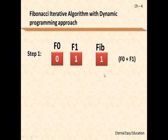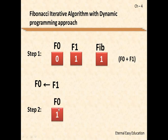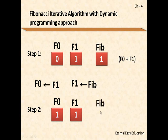Step 2: the value in f(1), which is 1, is given to f(0), so f(0) is now 1. Next, the fib value, which is 1, is given to f(1), so f(1) is now 1. Then fib = f(0) + f(1) = 1 + 1 = 2. The same process is repeated, so we now have two Fibonacci numbers: 1 and 2.